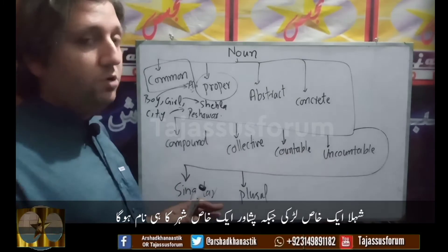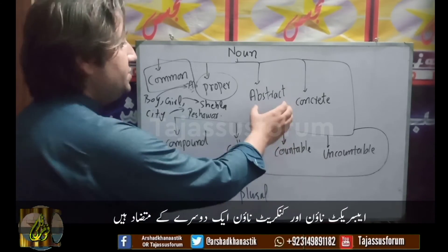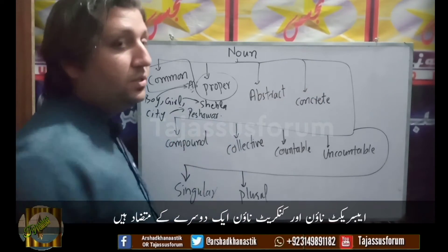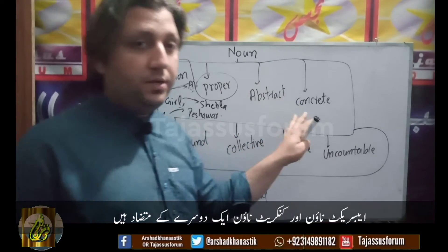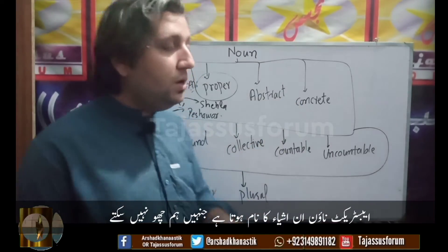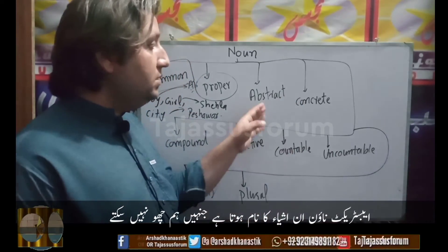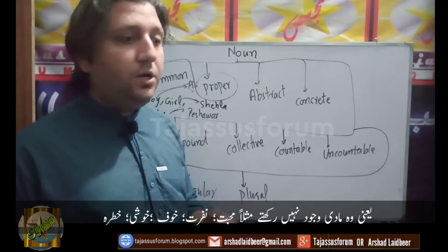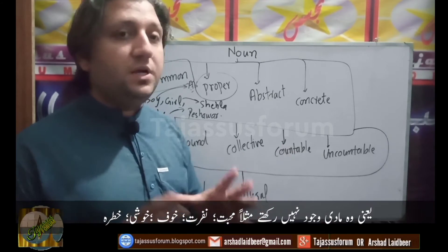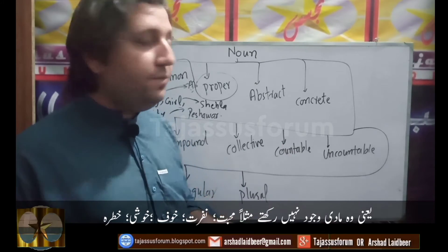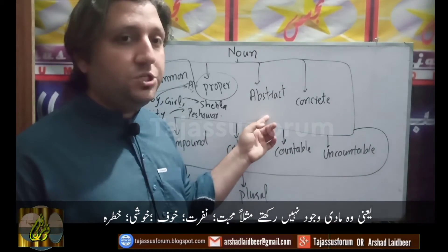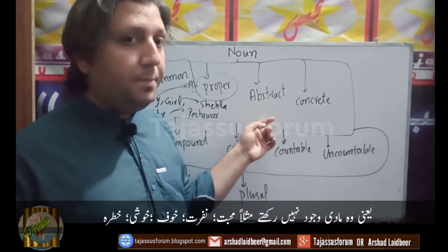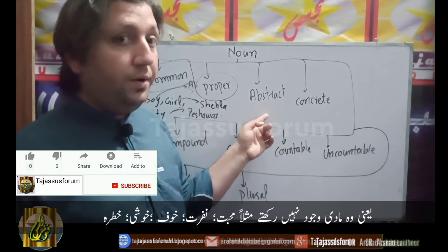Now coming towards abstract and concrete noun — these are opposite to one another. Abstract noun means the noun of things that you can't touch, that don't have a physical body. For example: love, hate, fear, happiness, danger — all these nouns are abstract nouns.